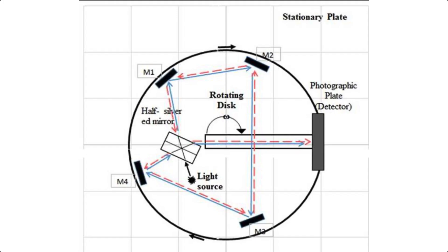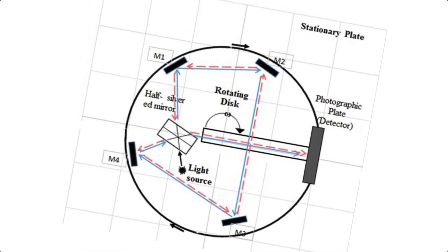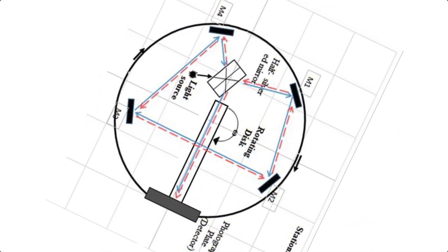A French scientist called Sagnac built a turntable with a light source, a semi-silvered mirror to split the beam of light into two, and mirrors to reflect one beam clockwise around the table and the other anticlockwise. When the turntable wasn't moving, there was no change in the spacing of the diffraction fringes for the light going clockwise and anticlockwise, since the aether was stationary. When the turntable was turning in the stationary aether, there was a fringe shift.